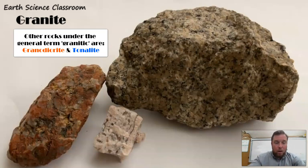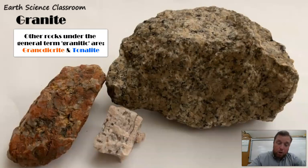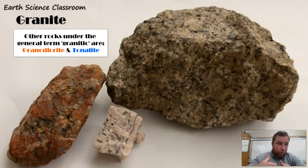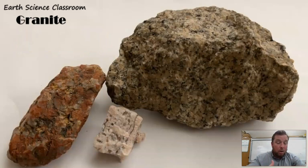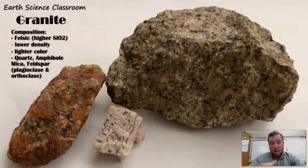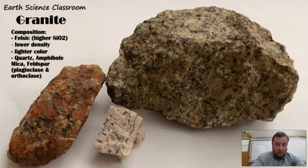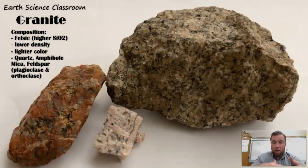Granite has a density of around 2.7 to 2.8 grams per cubic centimeter. It is lighter in color generally compared to more intermediate or mafic igneous rocks. It is termed felsic, which means it has a lot more silica in the composition, and that means it has more aluminum, more silica, and more feldspar in the mineral composition, creating its texture, color, and characteristics.